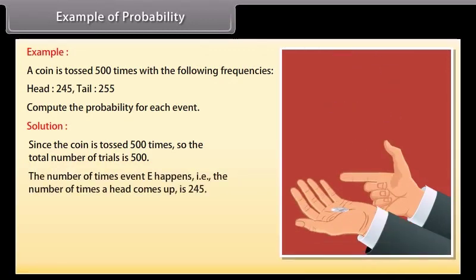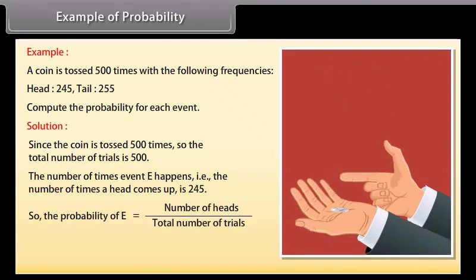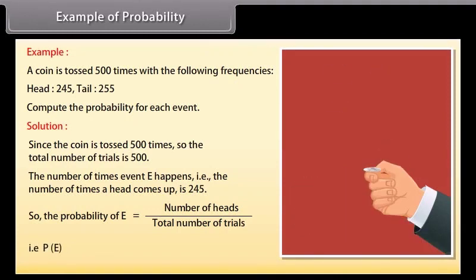The number of times event E happens, that is the number of times a head comes up, is 245. So the probability of E equals number of heads upon total number of trials. P(E) equals 245 upon 500, which equals 0.49.